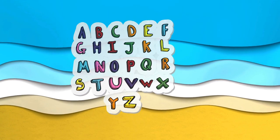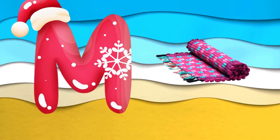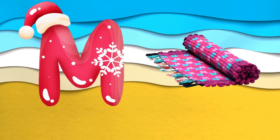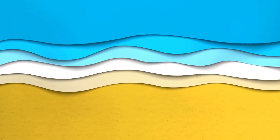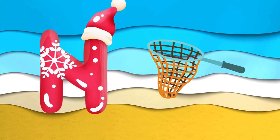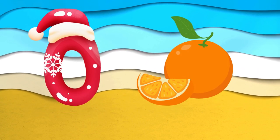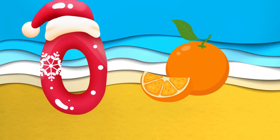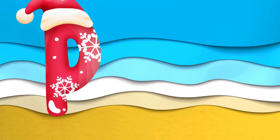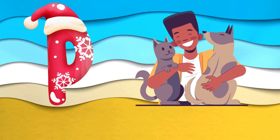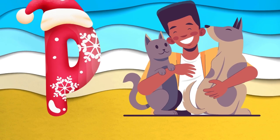M is for mat, m-m-mat. N is for net, n-n-net. O is for orange, o-o-orange. P is for pet, p-p-pet.